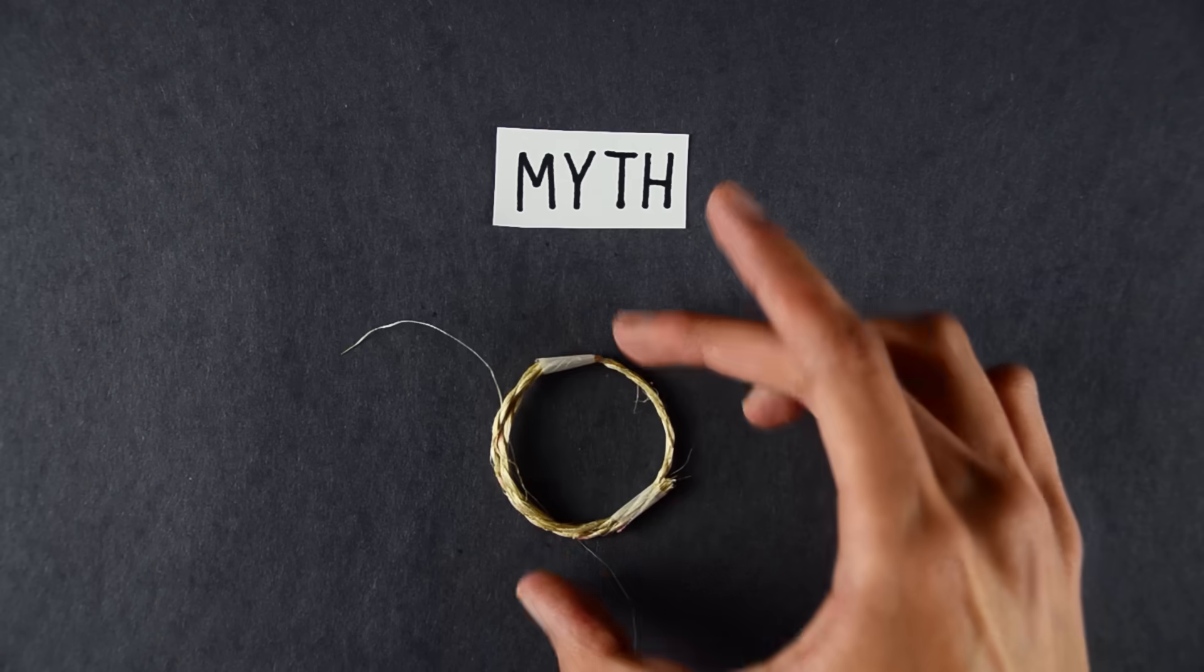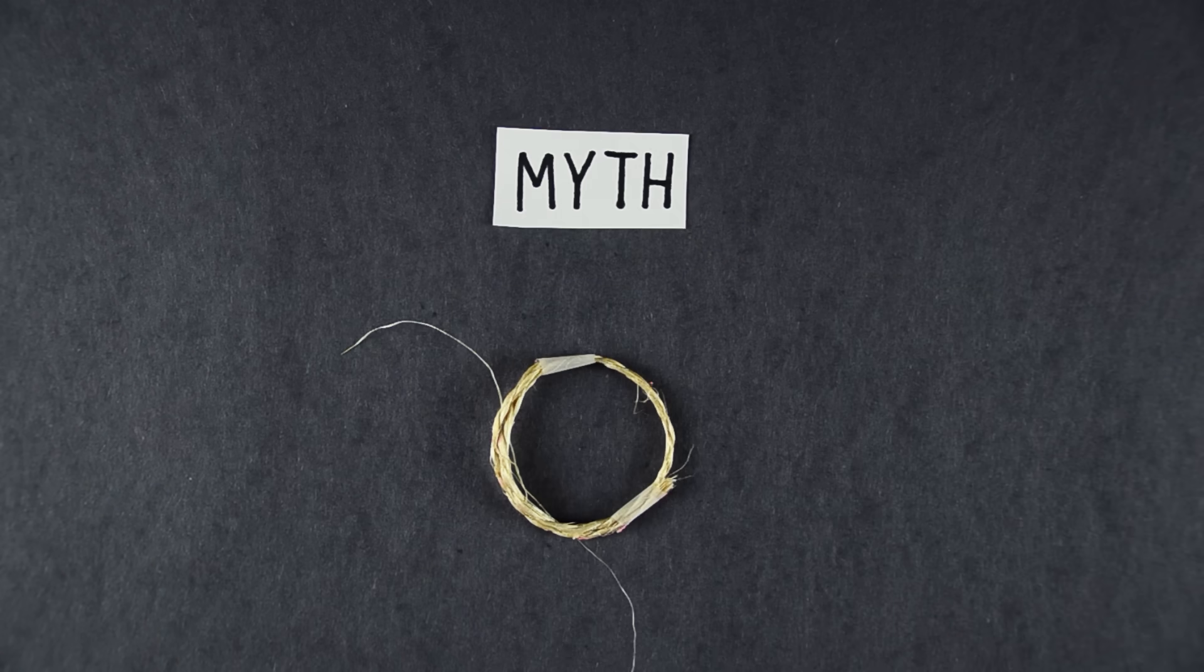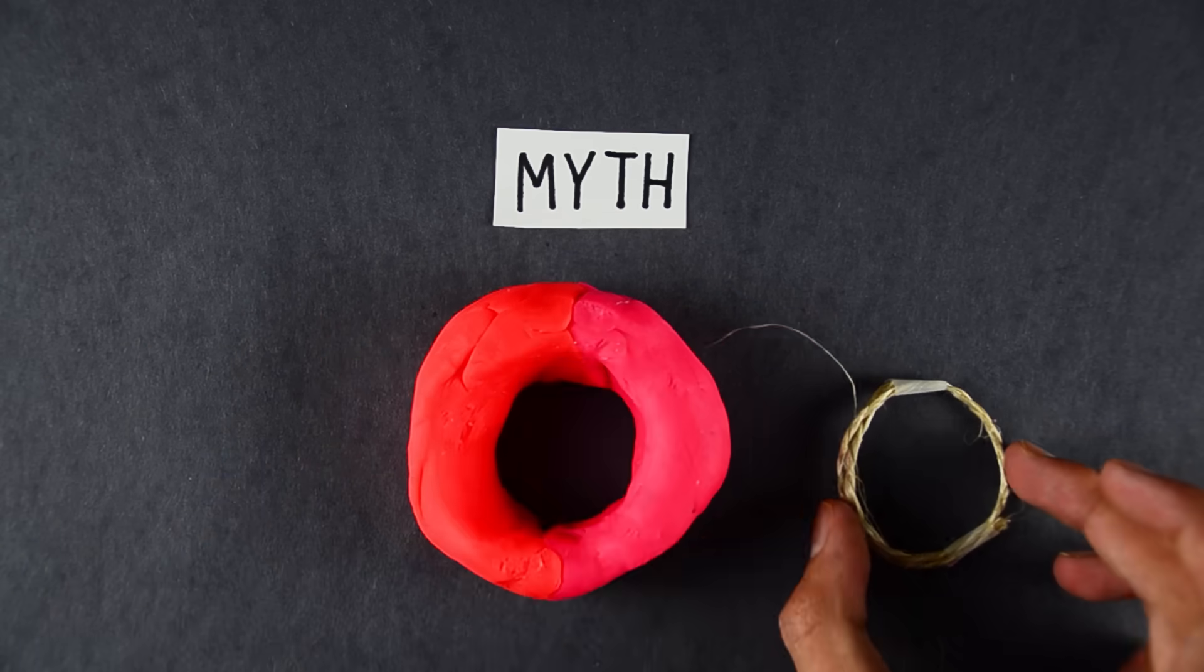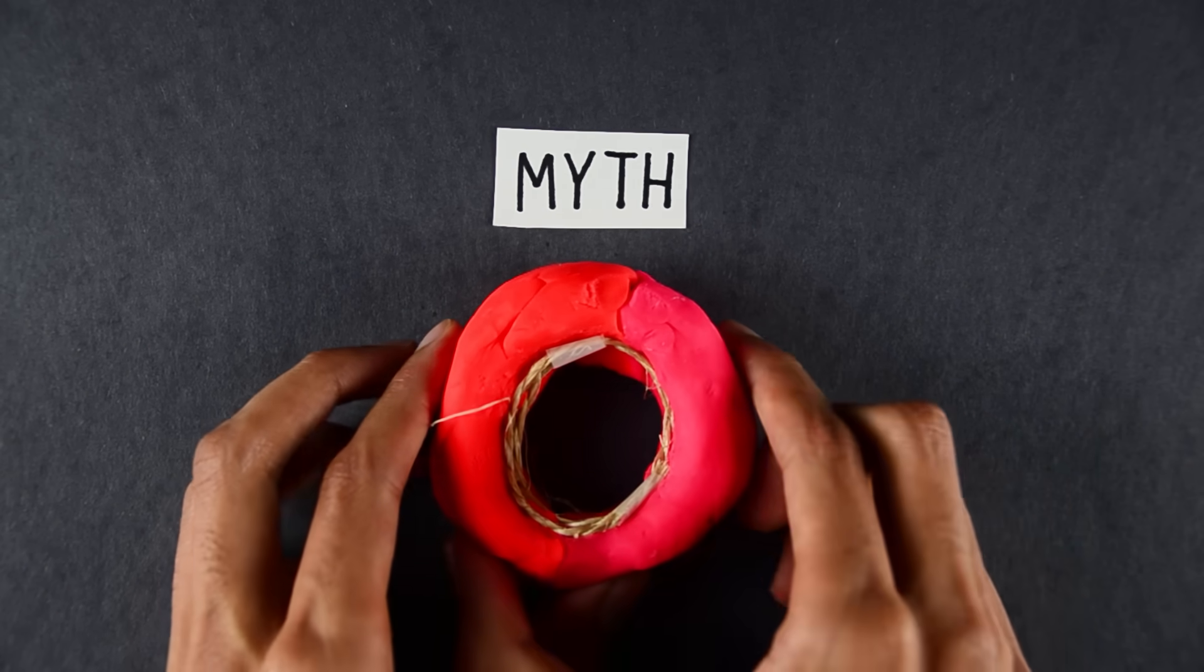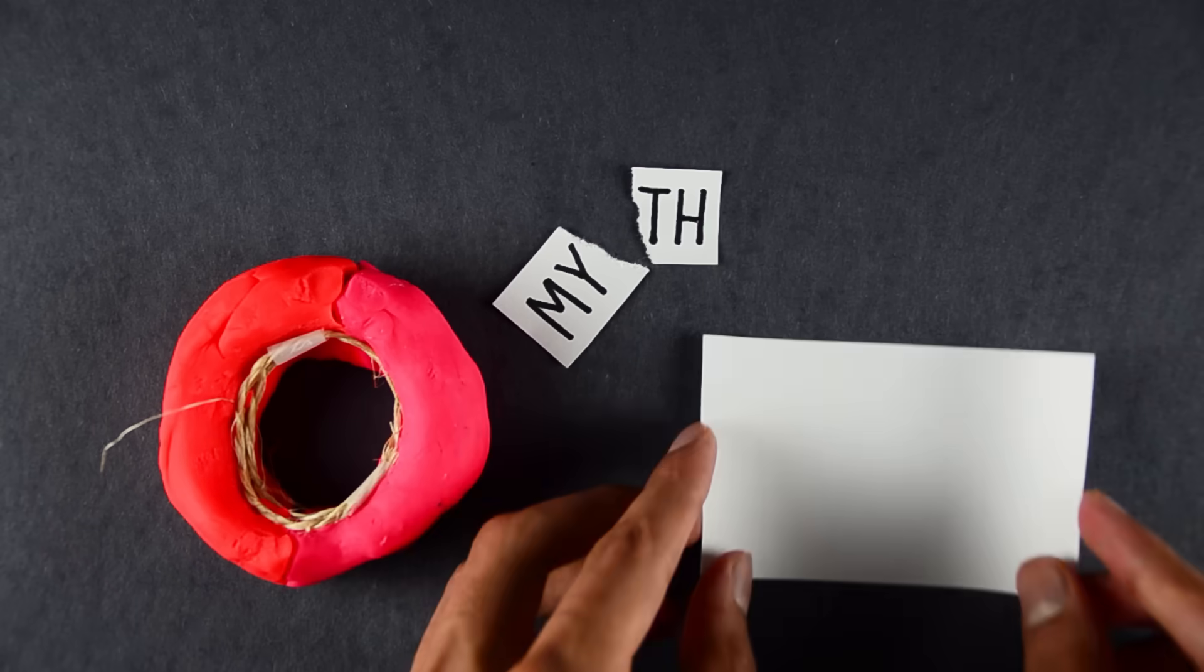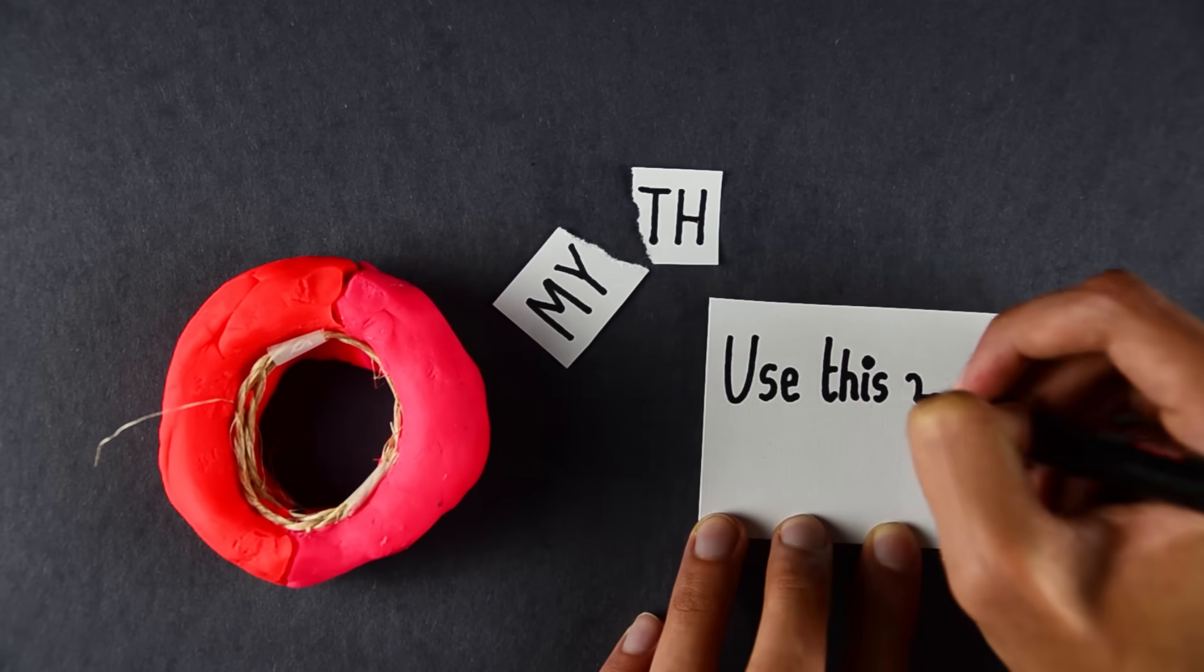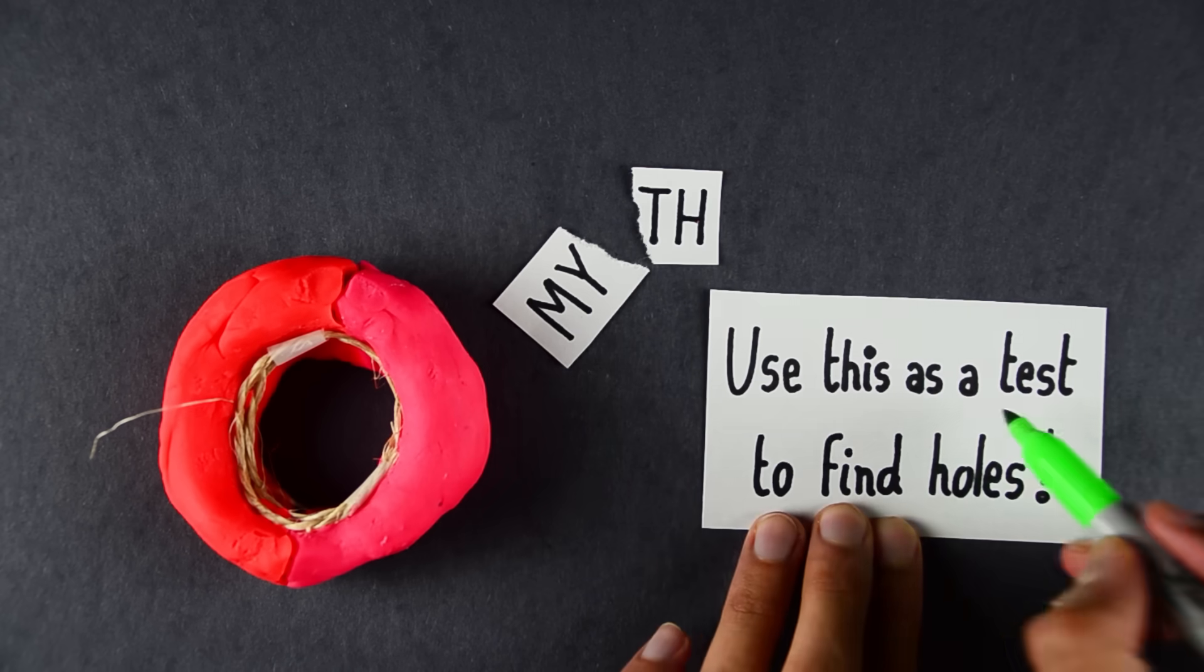Homology does this by looking at the following myth. Given a loop, there's always a region of space that it bounds. This is false in general. If your loop was on a torus, for example, then there's no region on the torus bounding it, because there's a hole. Here's the idea. We can use this as a test to find holes.